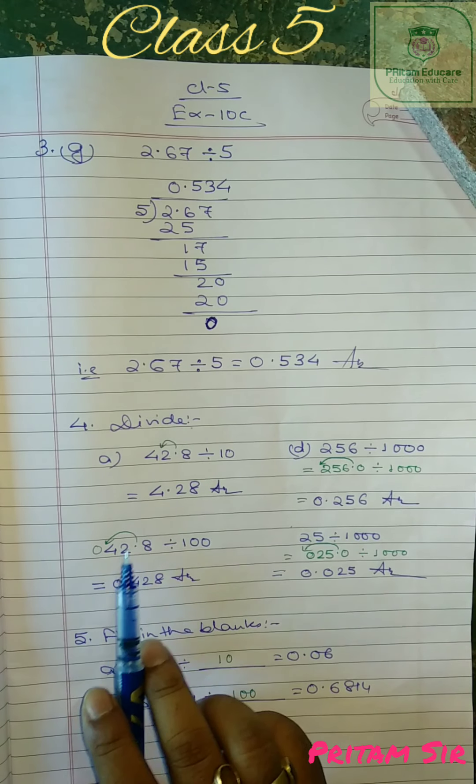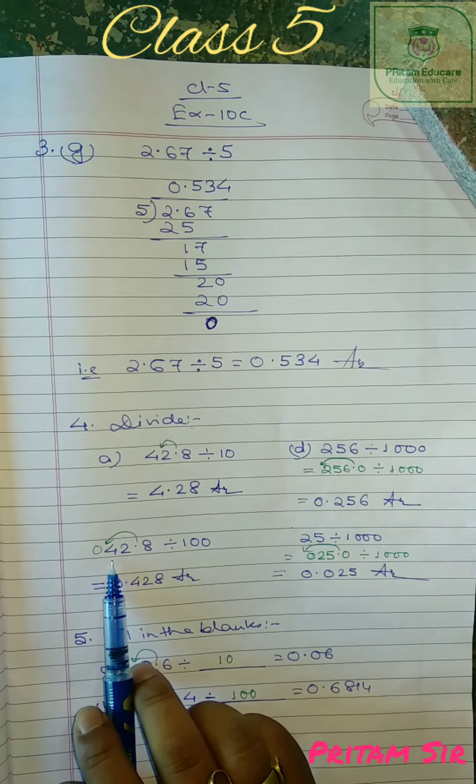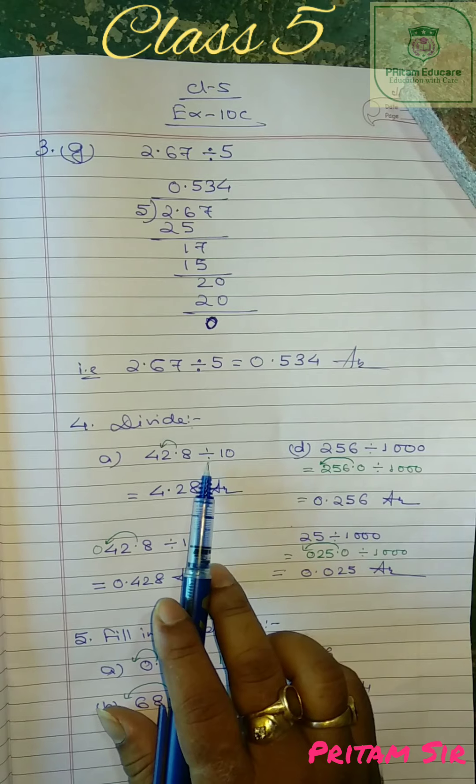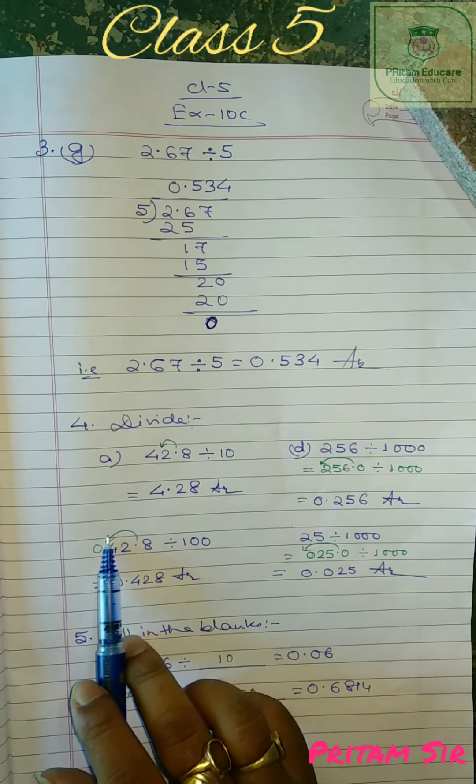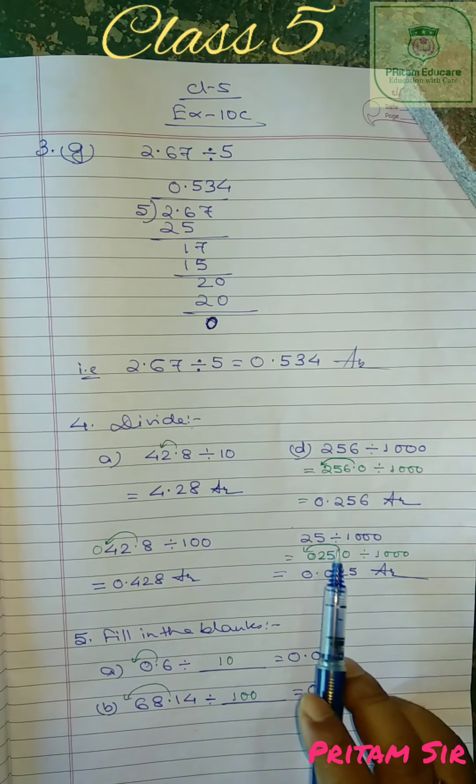So here you see another question given, I have missed it. 42.8 already shown. 42.8 divided by 100. Earlier it was divided by 10. Now it is divided by 100. So 100 means two zeros. It will shift to left side two digits. So 0.428.